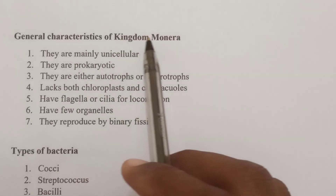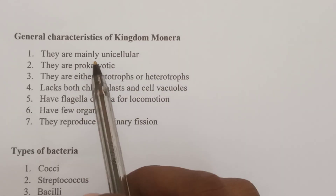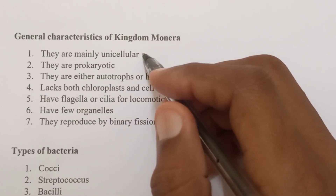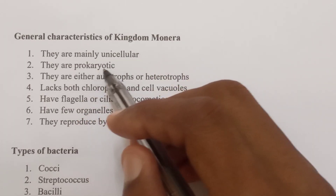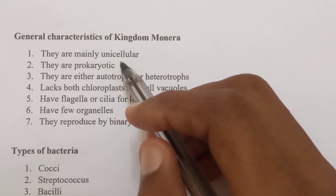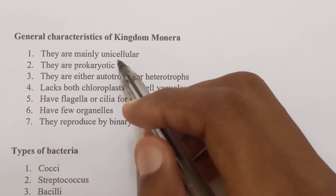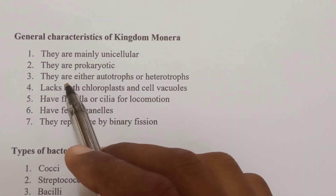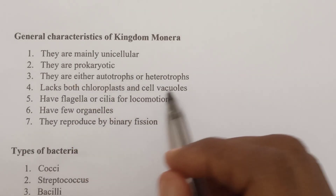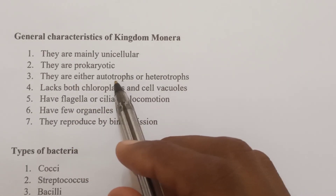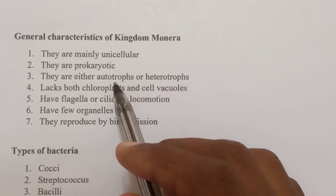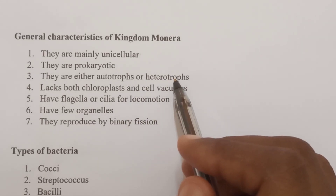General characteristics of kingdom Monera. Number one, they are mainly unicellular — this means they are single-celled organisms with only one cell. Number two, they are prokaryotic, meaning they are organisms whose nucleus is not bounded by a nuclear membrane. Number three, they are either autotrophs or heterotrophs. Autotrophs means they are able to make their own food, while heterotrophs means they feed on already made food.